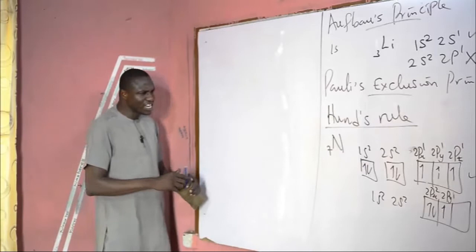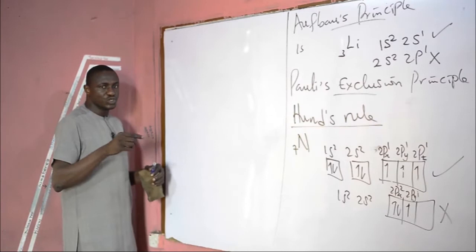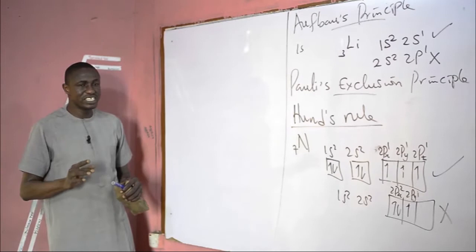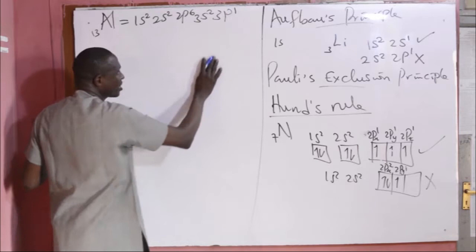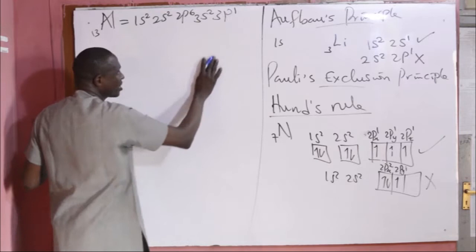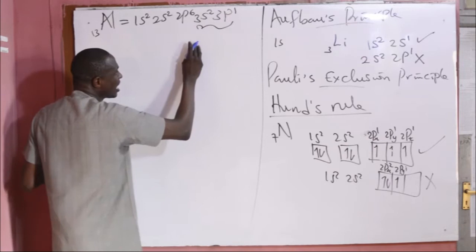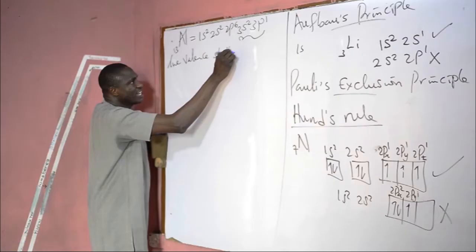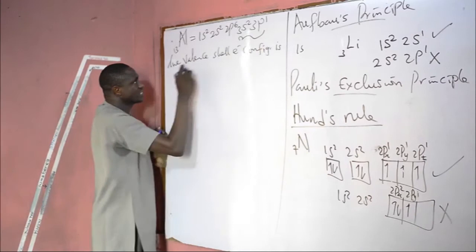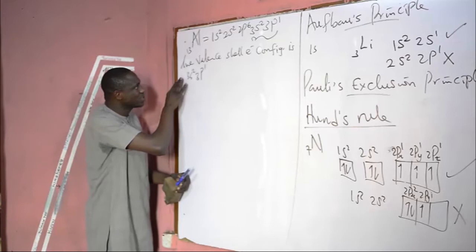Now, you may have a question of this kind: write the possible set of four quantum numbers for the valence electrons of aluminium. Aluminium has atomic number 13, and its full electronic configuration is 1s2, 2s2, 2p6, 3s2, 3p1. Because the highest principal quantum number is 3, the valence shell electron configuration is 3s2, 3p1, giving three valence electrons.